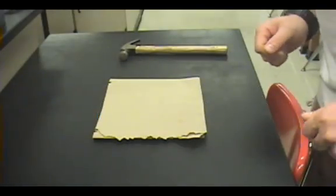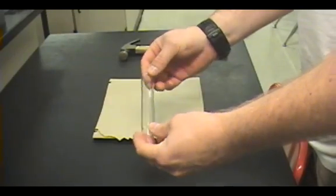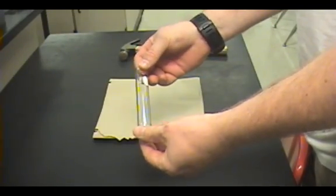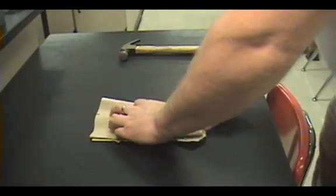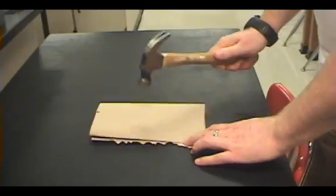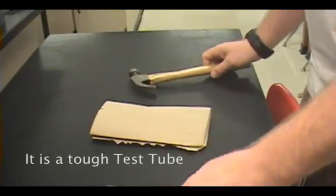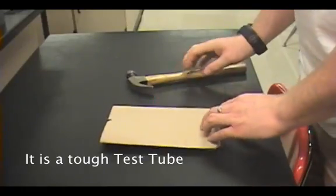Here's an example of a physical change. We have a test tube, a high temperature test tube, made out of glass, clear. Place it inside of the paper towel. Give it a good smack.